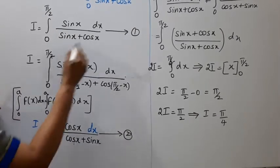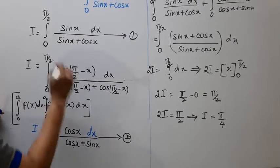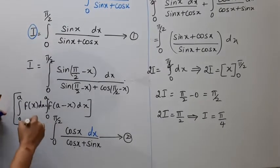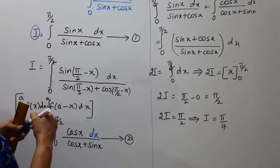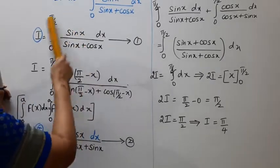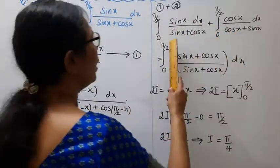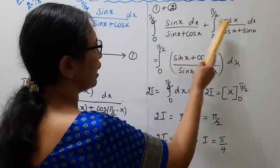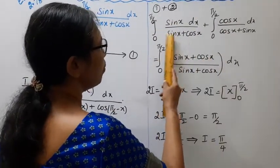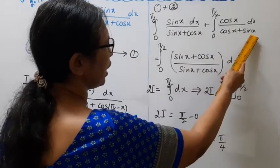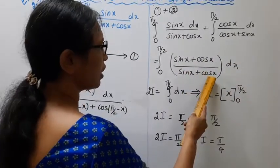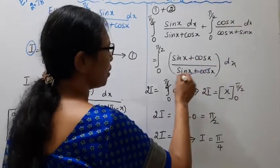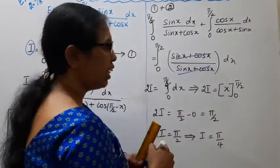Now add equations 1 and 2. I plus I is 2I. Adding the numerators: sin x plus cos x over (sin x plus cos x) dx, from 0 to π/2. The denominator cancels, leaving integration of 1 dx from 0 to π/2.